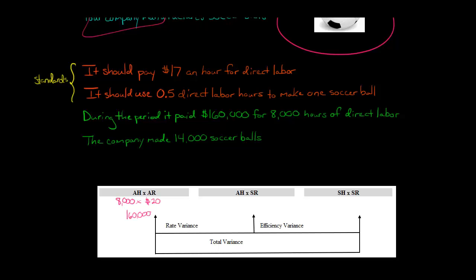Or if you just want to jump right to 160,000 and ignore this, that's fine, but I like to write it out. So we've got 160,000 over here. Now, actual hours times standard rate. Well, the actual hours, that's just this. We just carry that over, so that's going to be 8,000. Now the standard rate of direct labor is $17 an hour. Remember, that's set by management. So that's $17. Now, what is 8,000 times 17? That is $136,000. So all I did was just multiply these two numbers right here together.